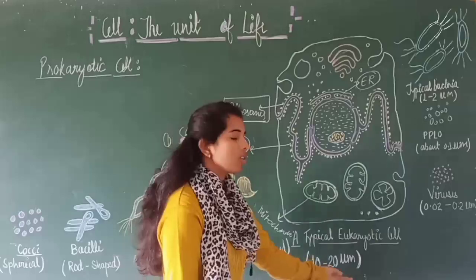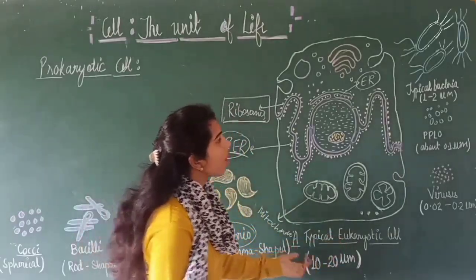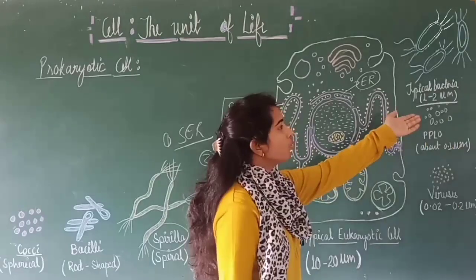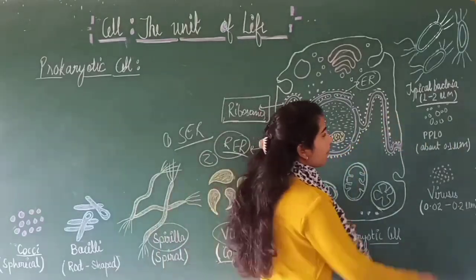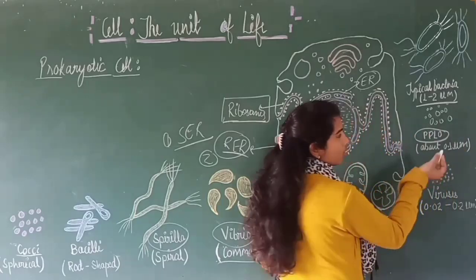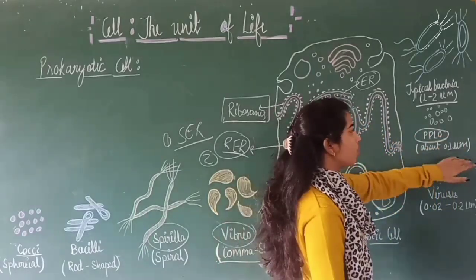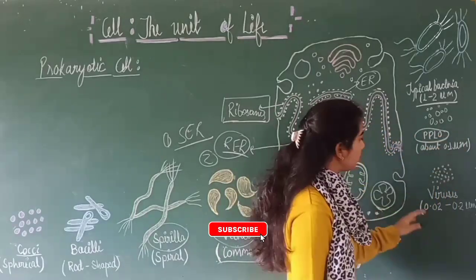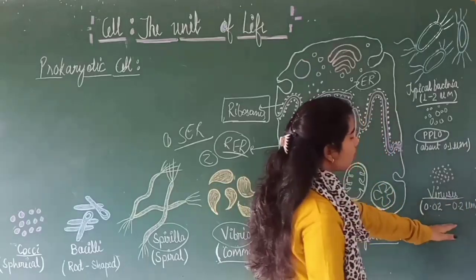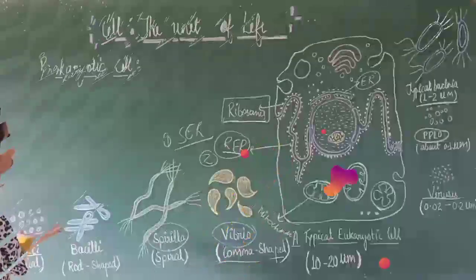The size of a eukaryotic cell is about 10 to 20 micrometres, whereas typical bacteria are 1 to 2 micrometres. PPLO, pleuropneumonia-like organisms, are about 0.1 micrometre in size. The size of viruses ranges from 0.02 to 0.2 micrometres.